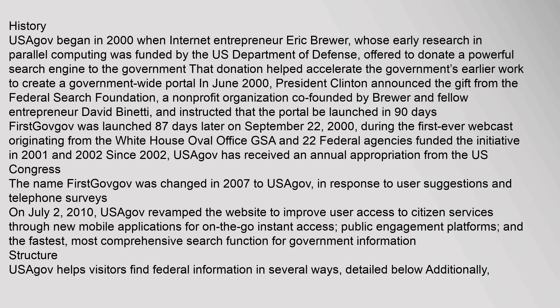History: USAGov began in 2000 when Internet entrepreneur Eric Brewer, whose early research in parallel computing was funded by the U.S. Department of Defense, offered to donate a powerful search engine to the government. That donation helped accelerate the government's earlier work to create a government-wide portal. In June 2000, President Clinton announced the gift from the Federal Search Foundation, a non-profit organization co-founded by Brewer and fellow entrepreneur David Benetti, and instructed that the portal be launched in 90 days. FirstGov.gov was launched 87 days later on September 22, 2000,